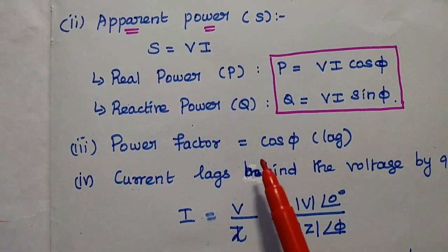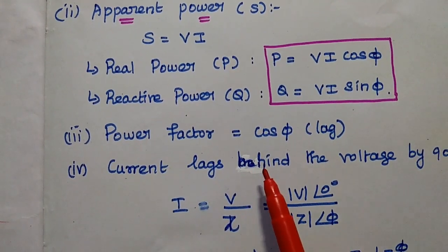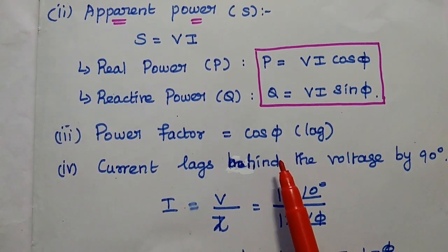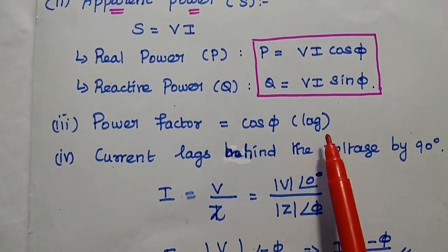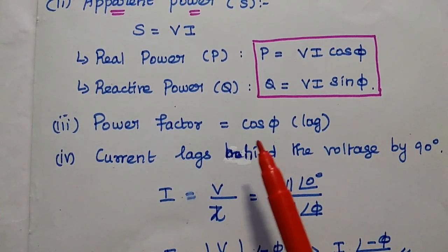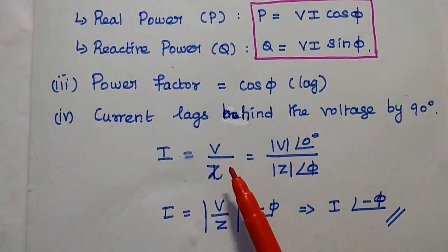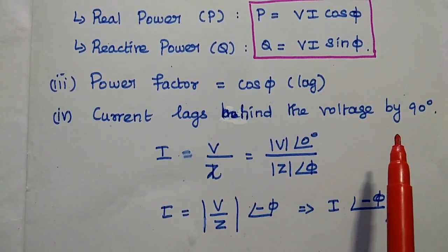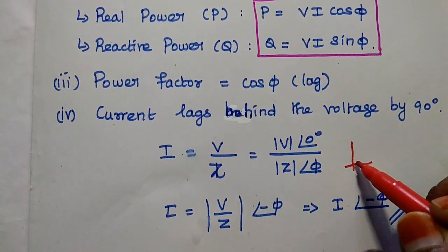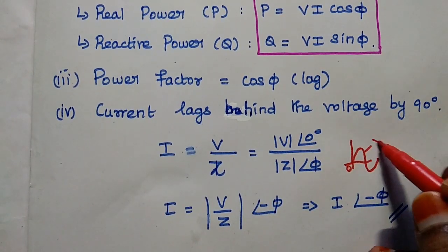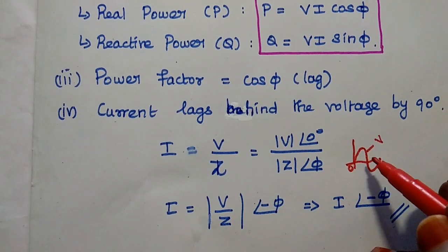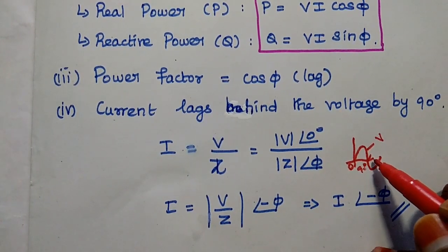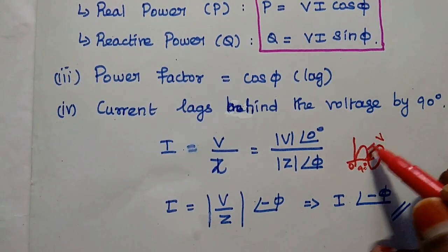The next important parameter is power factor, which is very important for evaluating the performance of the RL series circuit. The power factor is cos φ with a lag condition, where φ is the phase angle. In the RL series circuit, the current lags behind the voltage by 90 degrees, so the power factor is also lagging. This is a very important characteristic of the RL series circuit.